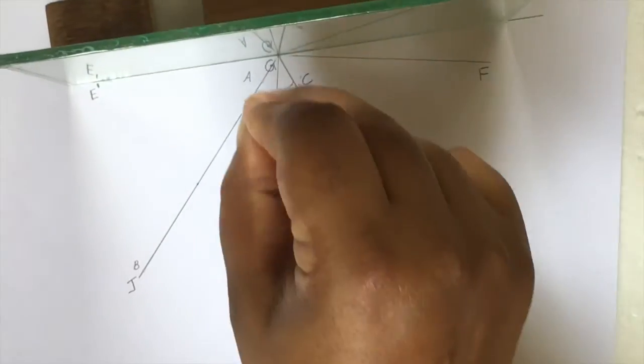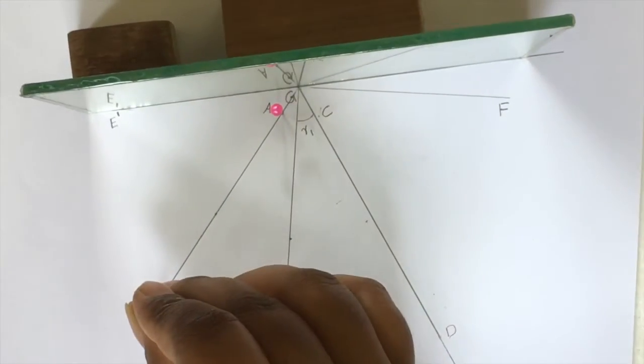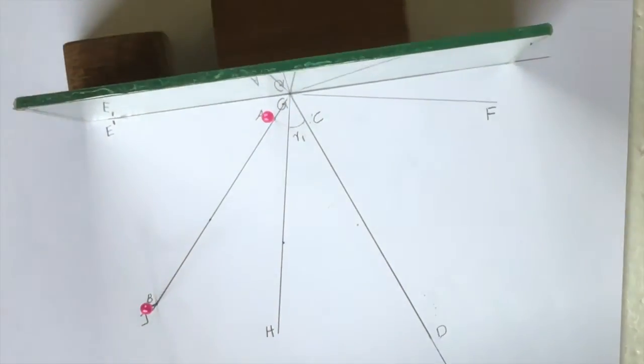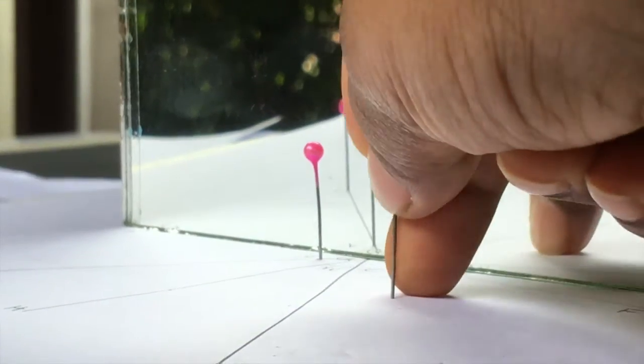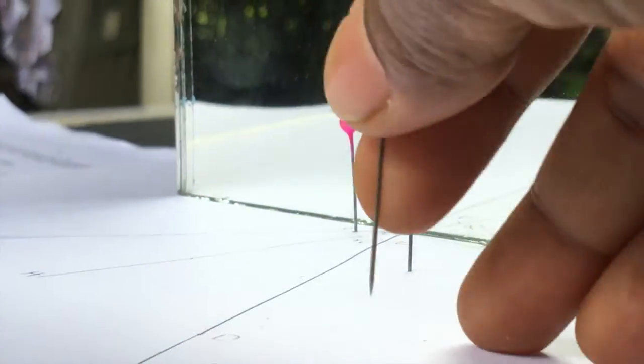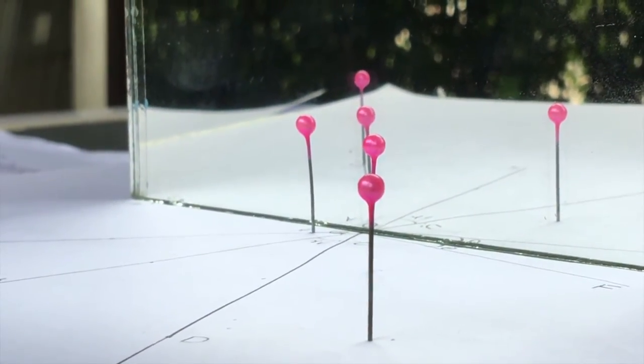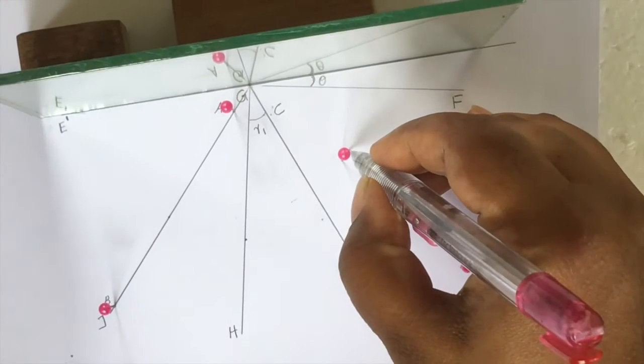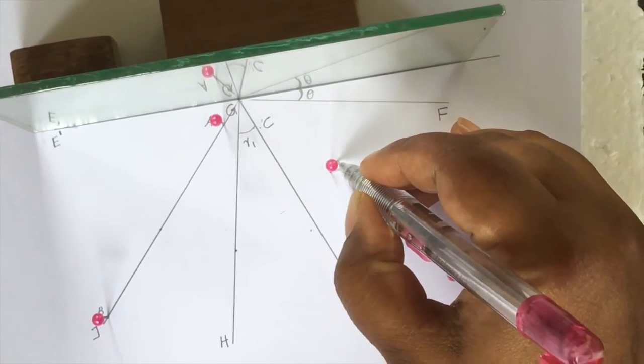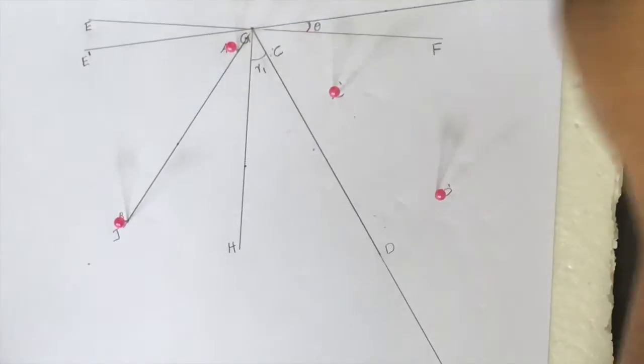Push the pin P1 and P2 into the sheet at the same point A and B previously. View the reflection of these two pins and push another to pin P3 and P4 as before. Mark the new position of pin P3 and P4 as C' and D'. Remove the pin and mirror.